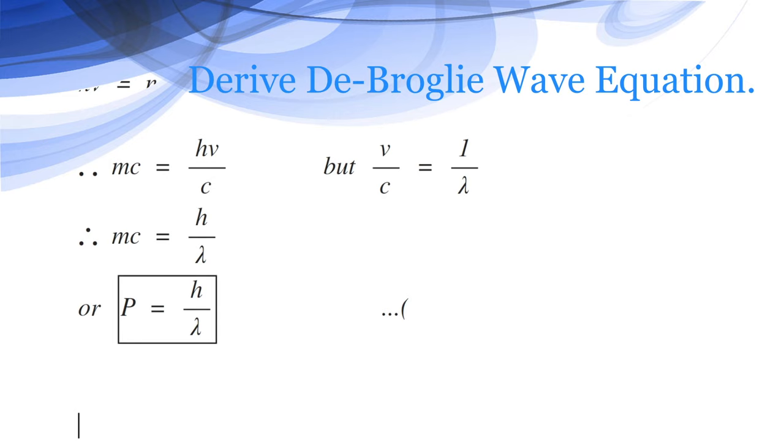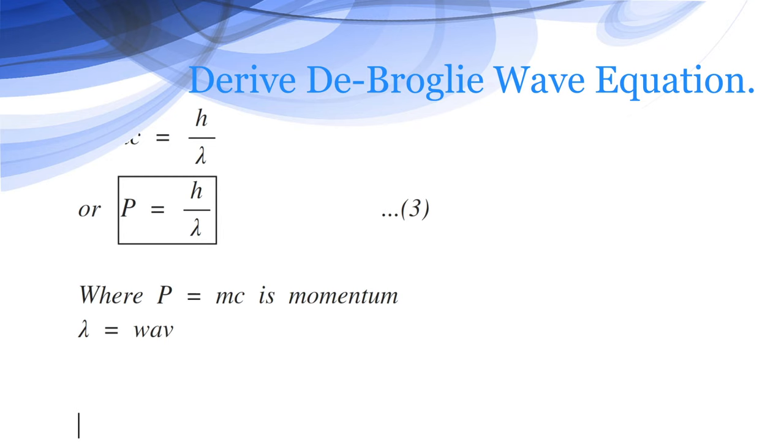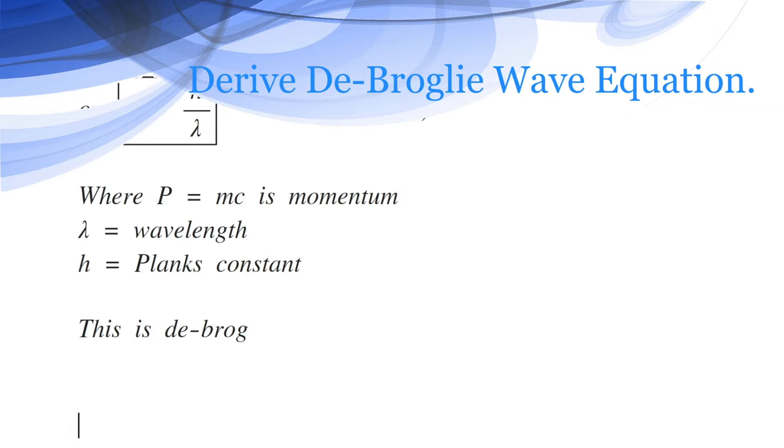Or p equals h by lambda. This is equation number 3, where p equals mc, which is momentum. Lambda is the wavelength and h is Planck's constant. This equation is known as de Broglie's equation.